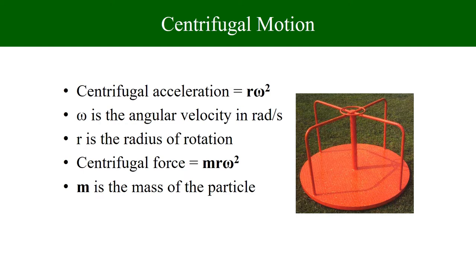Looking at this merry-go-round figure — something we have all used as children — you know that in order to stop a merry-go-round, you have to come closer to the center. As you come closer to the center, the speed decreases. Let us begin by understanding centrifugal motion using this example. The centrifugal force is felt outward, just as you experienced in the car.